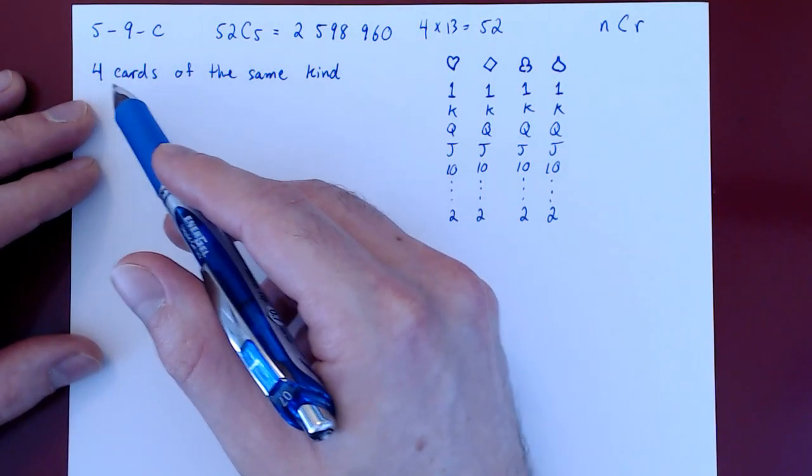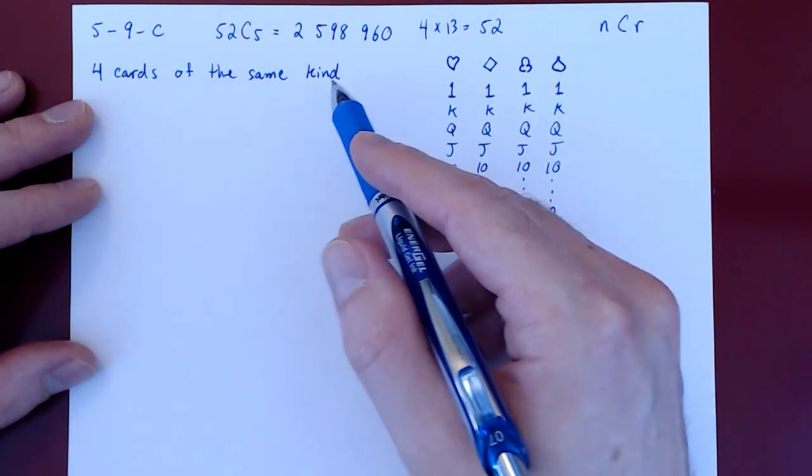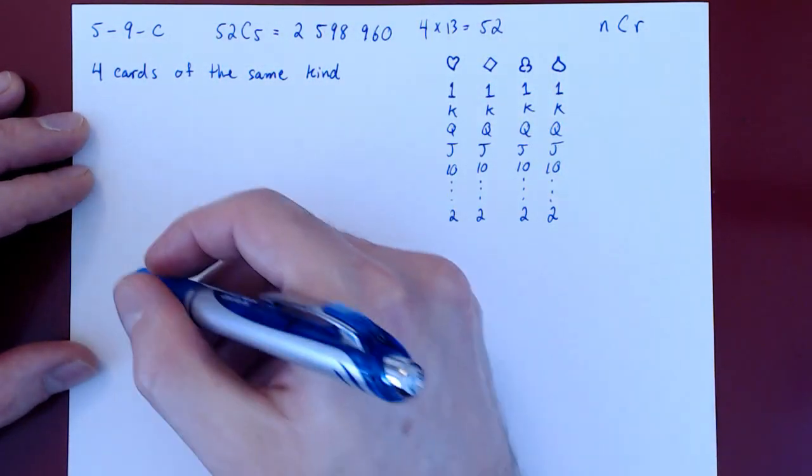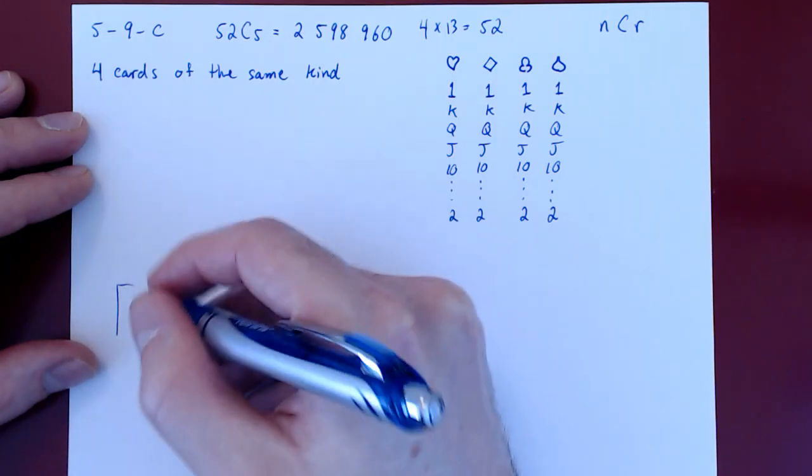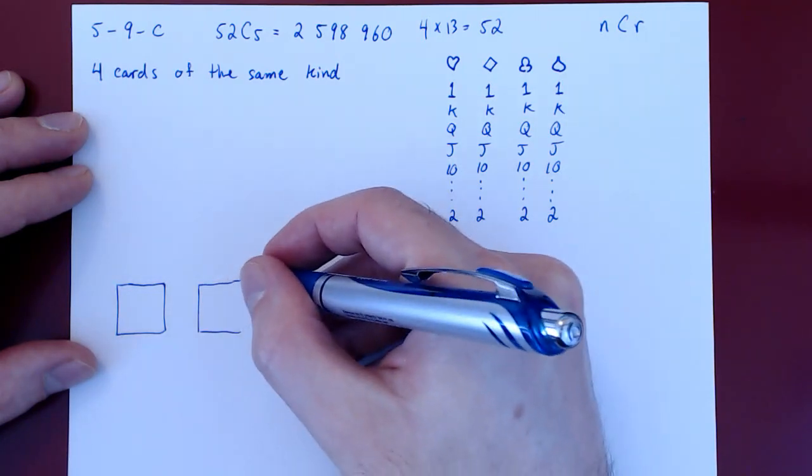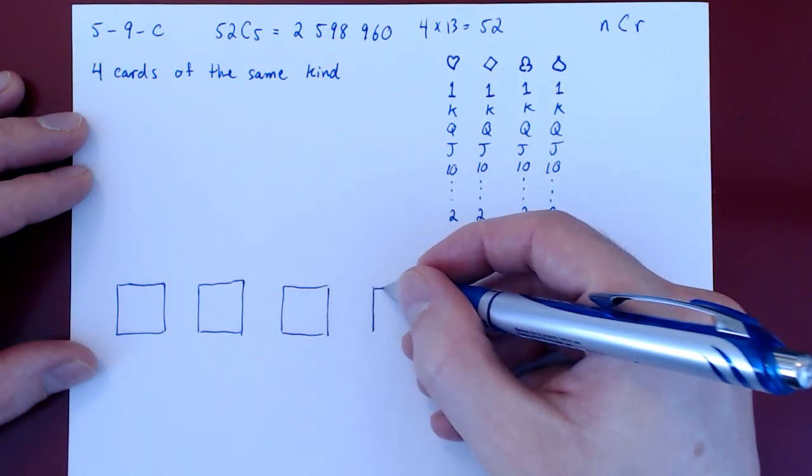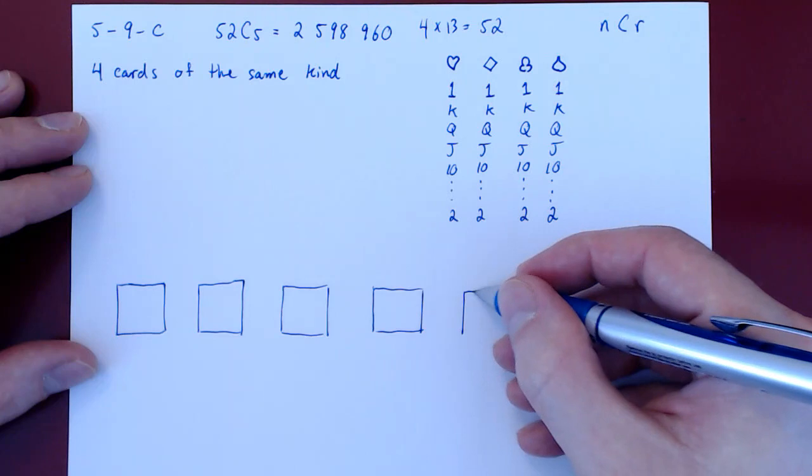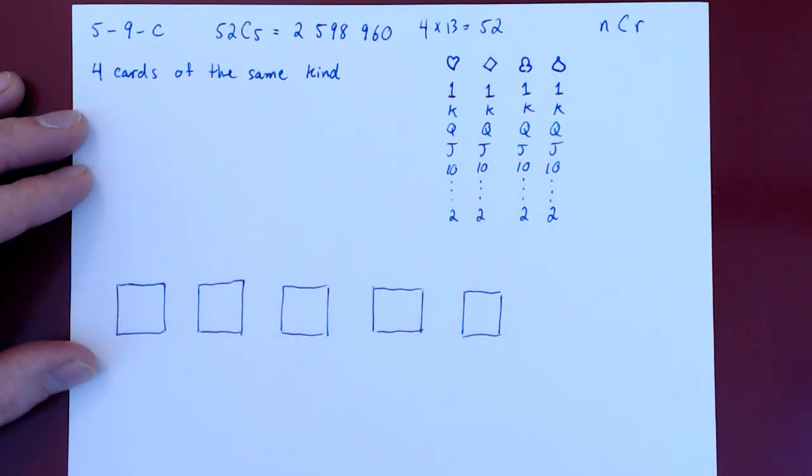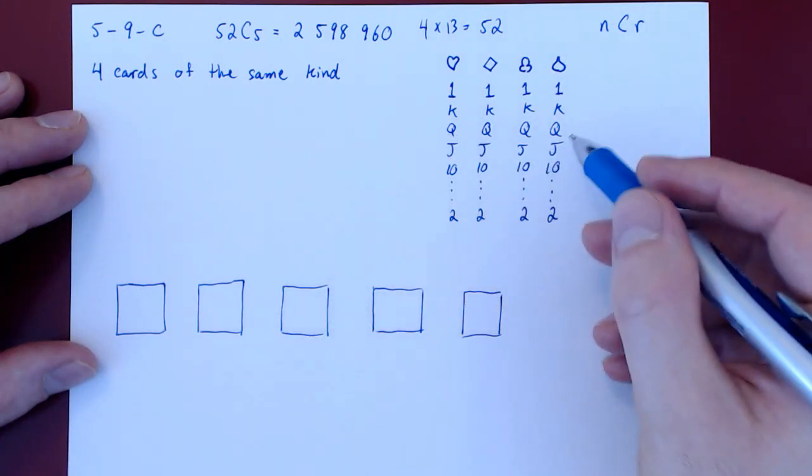We now want to count out of all of those possible hands of 5 cards only those that have 4 cards of the same kind. So essentially we are counting the hands of 5 cards that have a quadruple. Before counting those in general, we can write down a specific such hand and then work from the special case to the general setup. So suppose we are dealt randomly 5 cards from the deck.